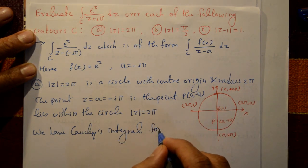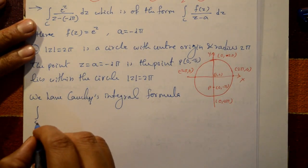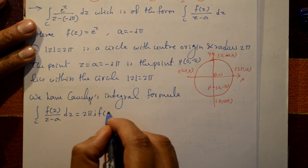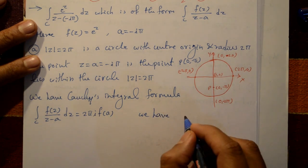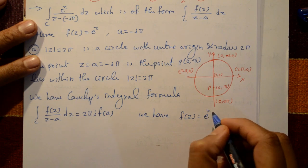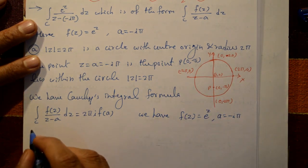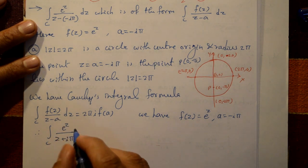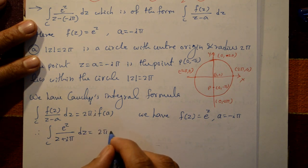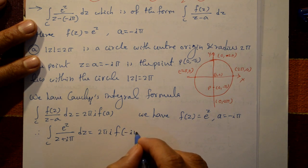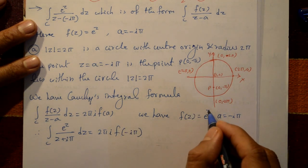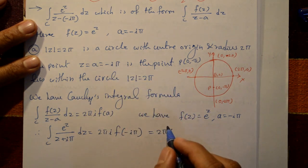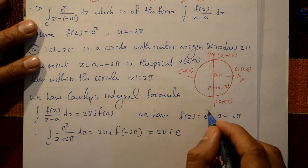Using Cauchy's integral formula: ∮ f(z)/(z - a) dz = 2πi · f(a). Here f(z) = eᶻ and a = -iφ, so the integral equals 2πi · f(-iφ) = 2πi · e^(-iφ).